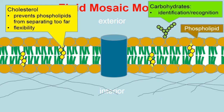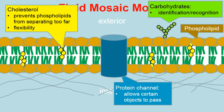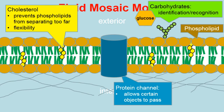Another component is the blue channel in the middle — the protein channel. As the name implies, it's made from protein and it allows certain objects to pass that can't pass through the phospholipid bilayer, including larger molecules or molecules with a charge. Glucose is a great example: glucose is unable to pass through the phospholipid bilayer, but cells need glucose, so it's taken in through these protein channels to the interior of the cell.